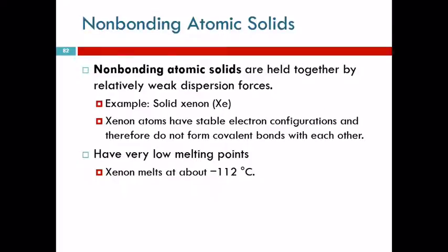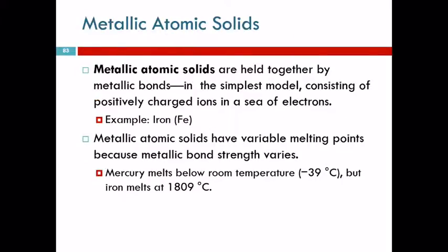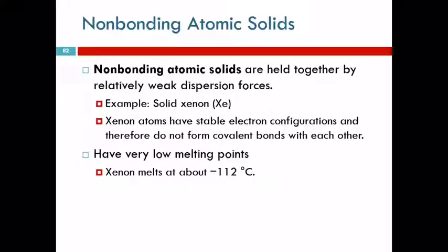The non-bonding solids, just the dispersion forces to hold them together. Xenon's going to melt at about minus 112. How does gas melt? Well, it would melt if it was frozen. So you can get it to go from a gas to a liquid somewhere above minus 112. And if you keep getting it colder and colder, you can get it to freeze at minus 112. If you get it colder, it'll just be a colder solid. If you let it warm up, it'll melt at minus 112.